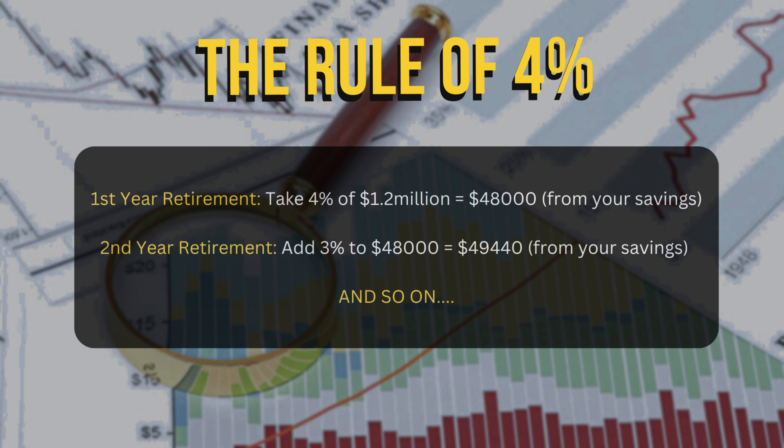What is the 4% rule? The 4% rule is intended to supply a steady stream of income while maintaining an adequate account balance for future years during retirement. For example, if you have saved up $1.2 million, upon retirement you will be able to make withdrawals of $48,000 in the first year, then add 3% to the withdrawal amount in the second year and so on to account for inflation. Therefore, you will be withdrawing $49,440 in the second year of your retirement.